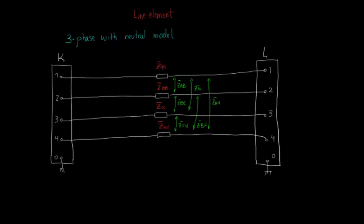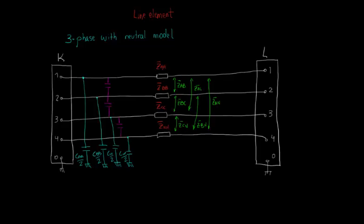In OpenDSS, the line is modeled using the PI model, in which we split the total line's capacitance and consider half of it at the beginning and the other half at the end of the line, for both self and mutual capacitance, as you can notice.